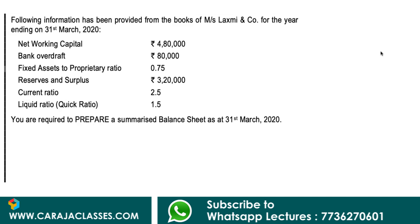The following information has been provided from the books of Mrs. Lakshmi and Co for the year ending 31st March 2020. Networking capital is 4 lakh 80,000, bank overdraft is 80,000, fixed assets to proprietary ratio is 0.75, reserves and surplus are 3 lakh 20,000, current ratio is 2.5, and liquid ratio (quick ratio) is 1.5. We are required to prepare a summarized balance sheet as at 31st March 2020. It's a simple problem picked up from the revision test paper of ICAI.